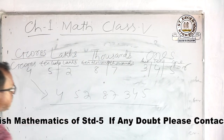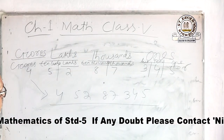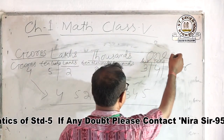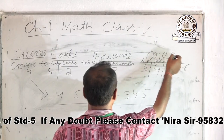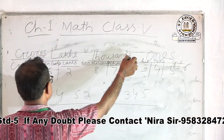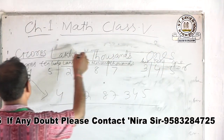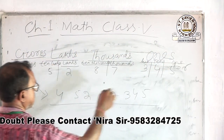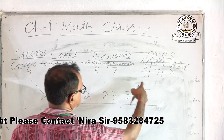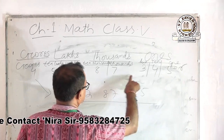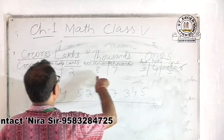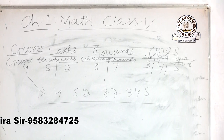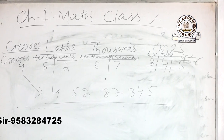Here is the number table for you. You may be wondering about this number table — it has ones, thousands, lakhs, and crores. Here is an example of an 8-digit number.